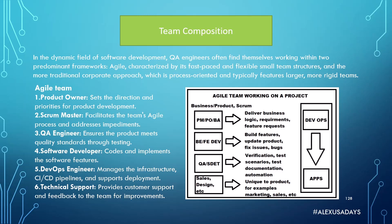Let's talk about it so you have some understanding of where you might end up and how you fit in the process. In the dynamic field of software development, QA engineers often find themselves working within two predominant frameworks: agile, characterized by its fast-paced and flexible small team structures, and the more traditional corporate approach, which is process-oriented and typically features larger, more rigid teams.